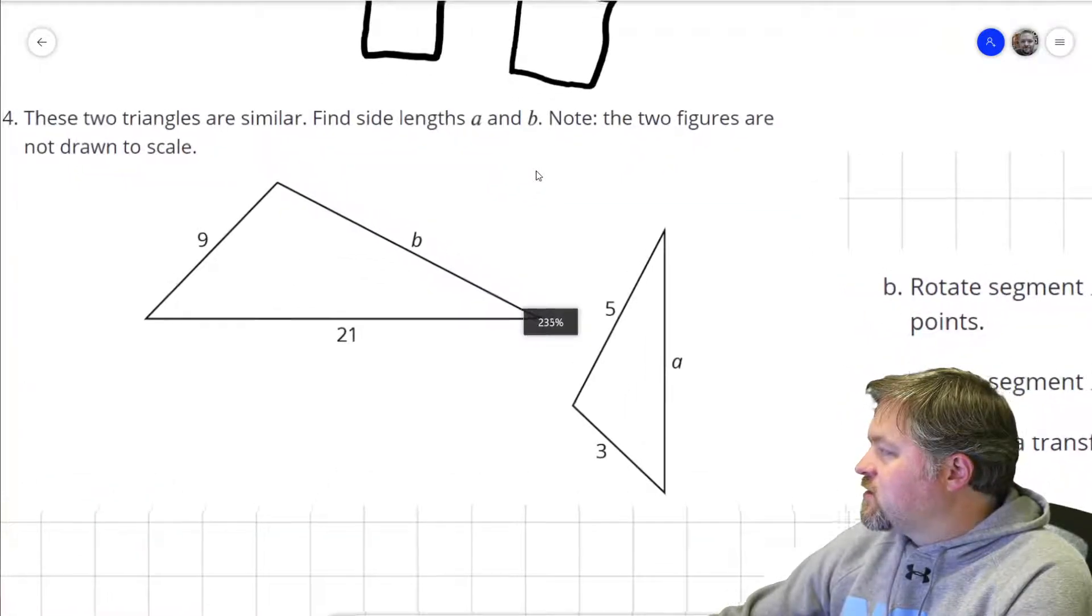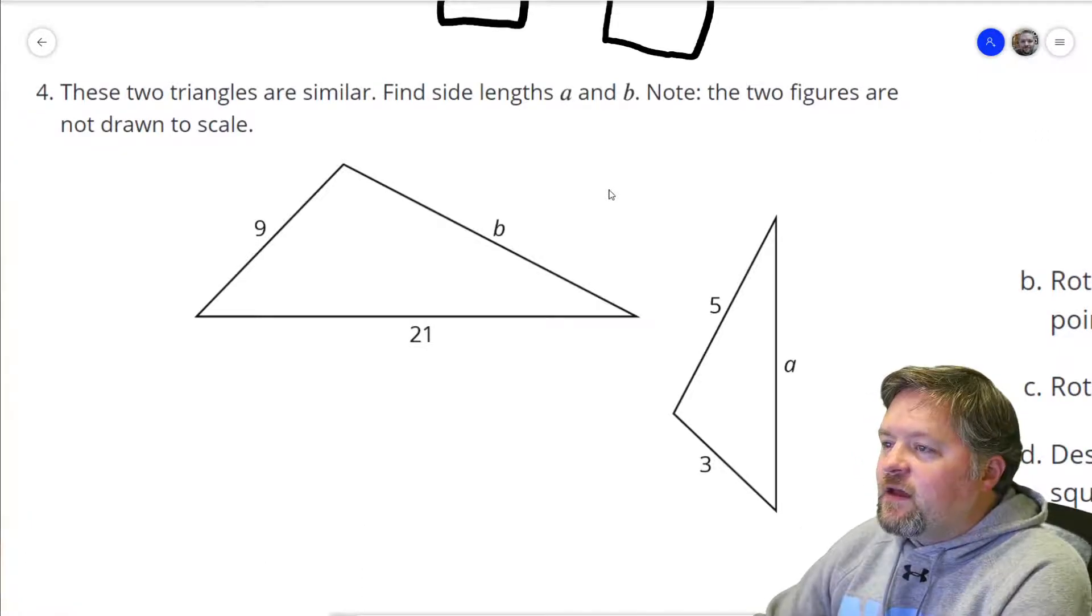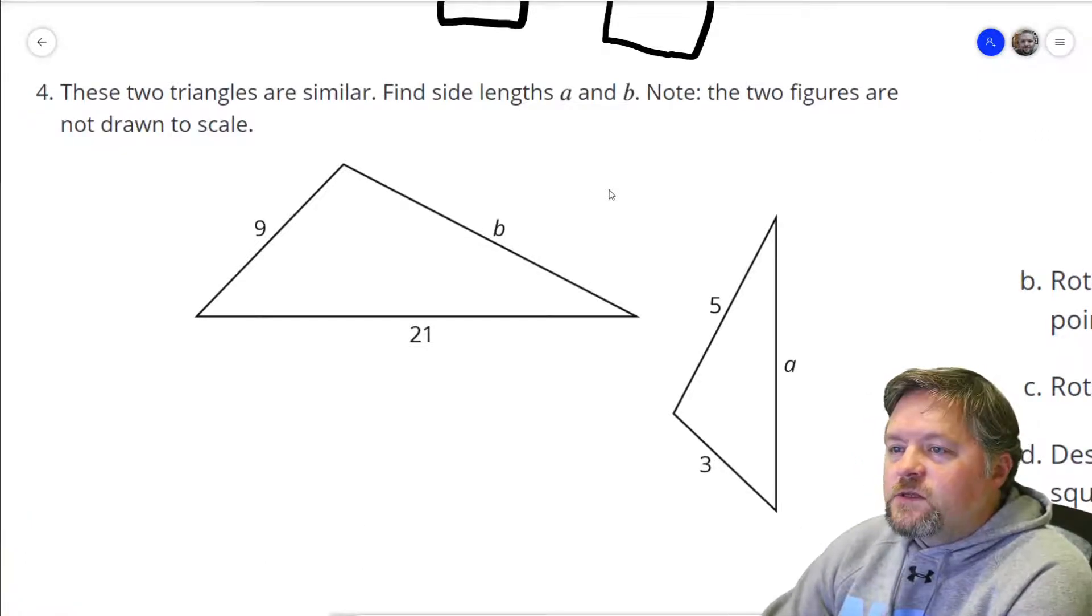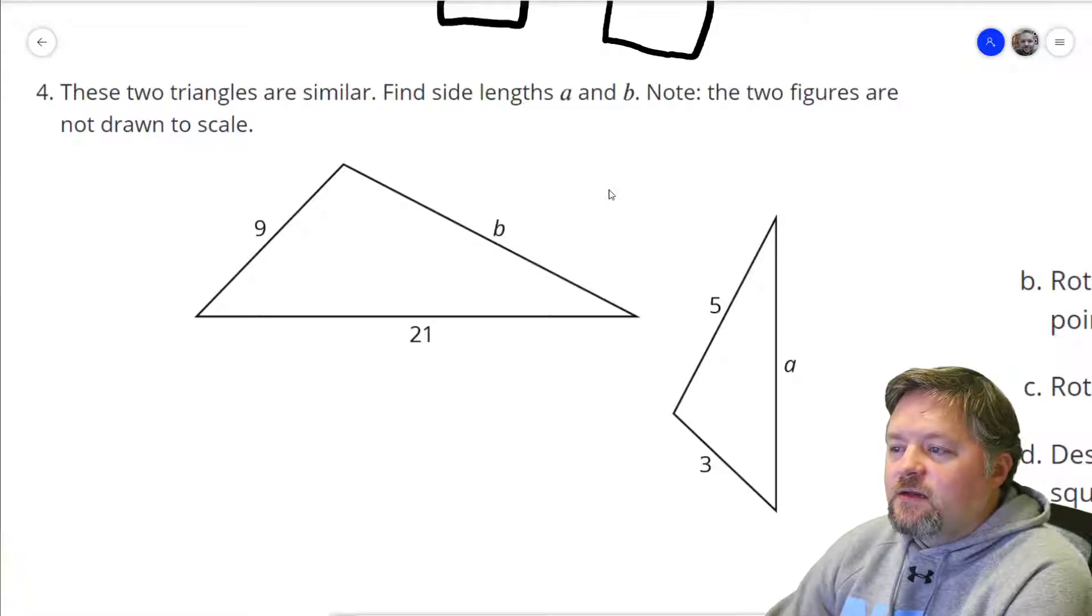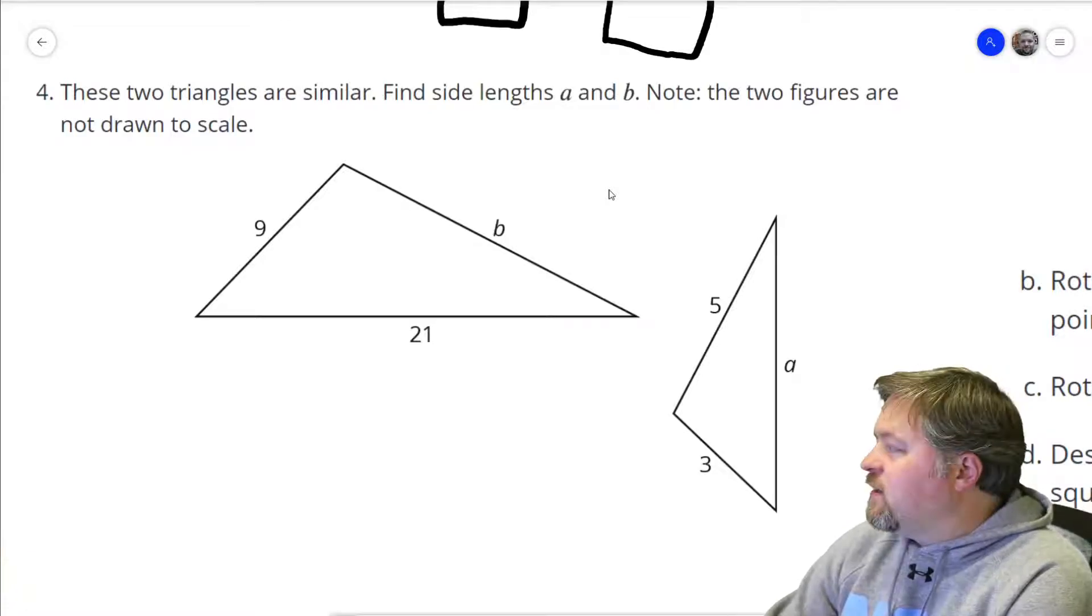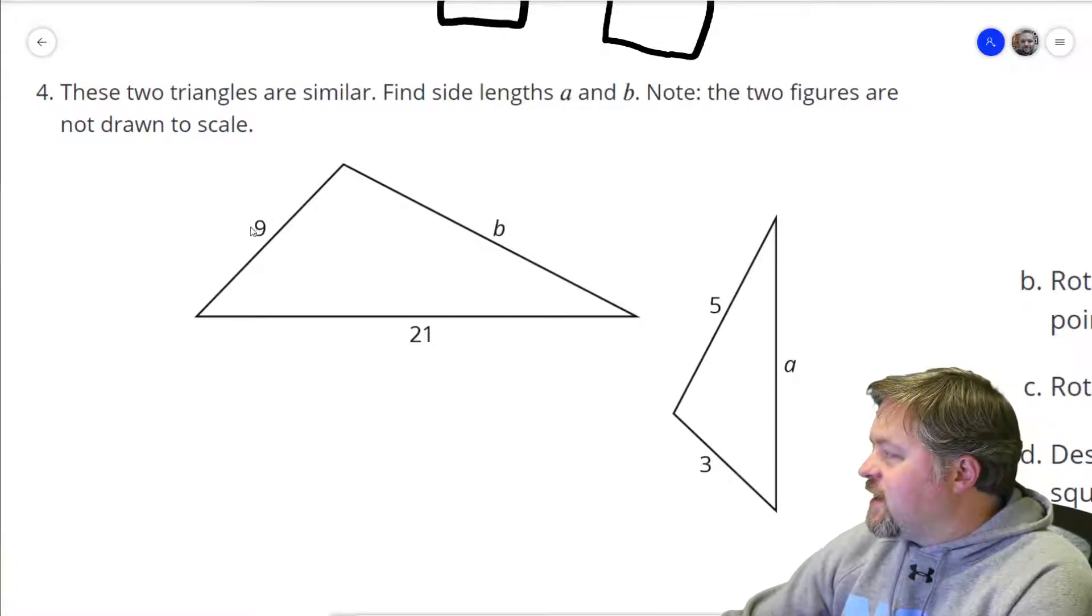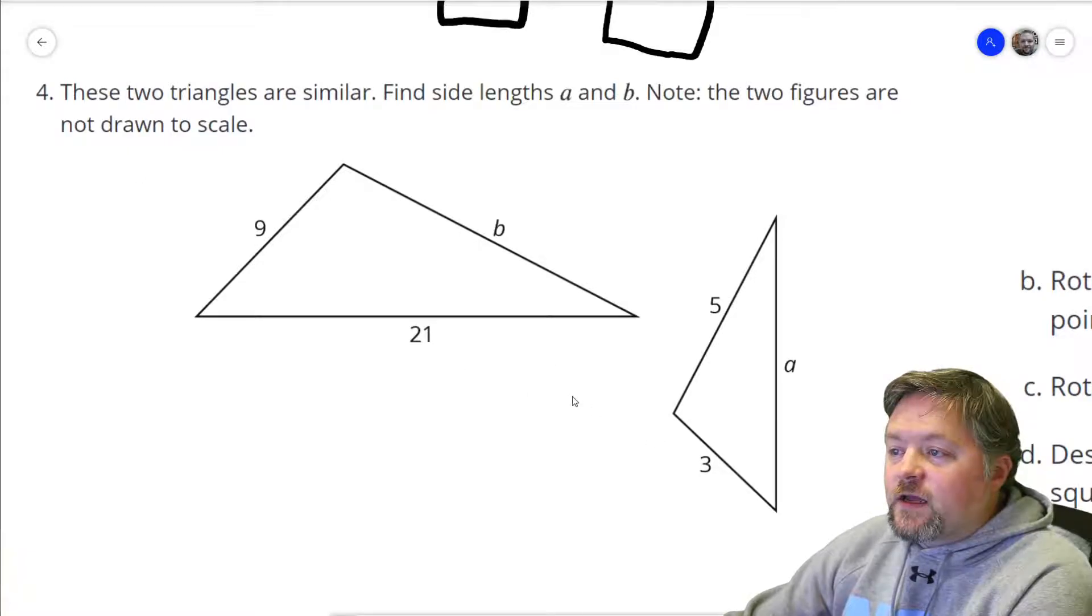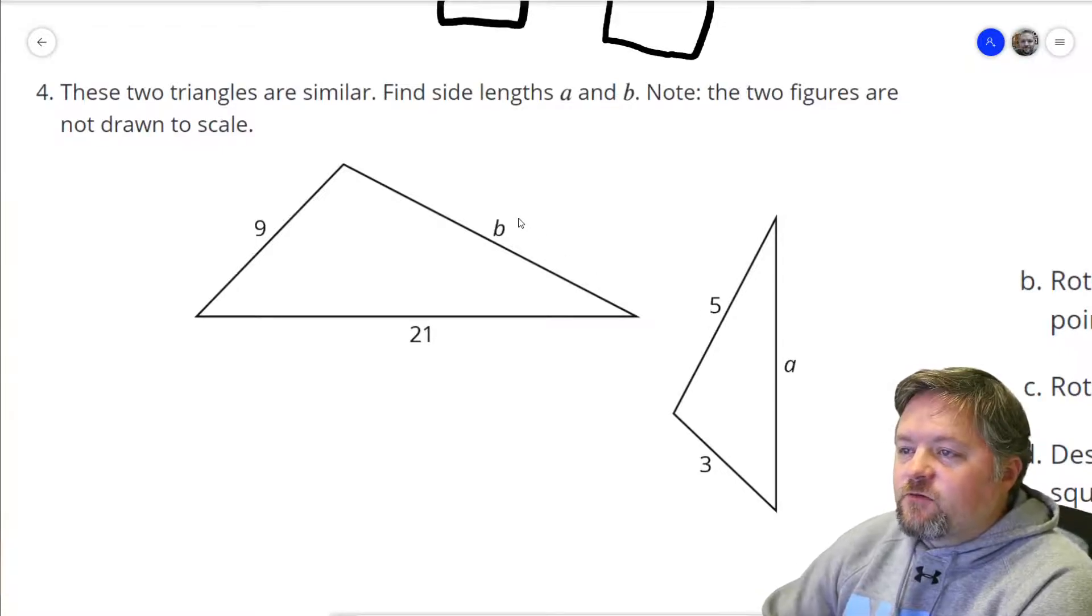These two triangles are similar. Find the side lengths of A and B. Well, what's the scale factor? To go from this 3 to its corresponding side, which is 9, we need a scale factor of 3. So to go from this 5 to its corresponding B, we also need a scale factor of 3. 5 times 3 is 15.